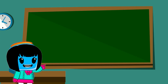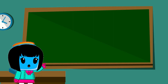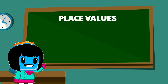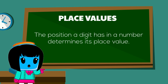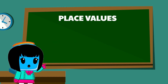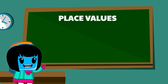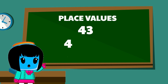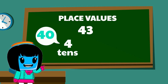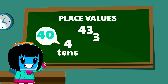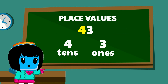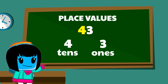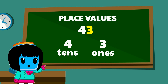These bundles of 10 help us to understand place value. The position that a digit has in a number determines its place value. In our previous example, 43 has four tens which is 40 and three ones which is three. The four is in the tens place and the three is in the ones place.